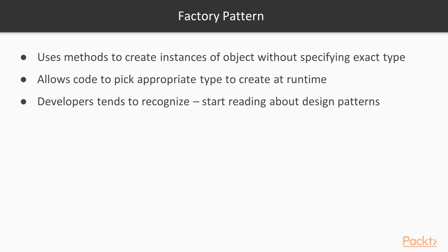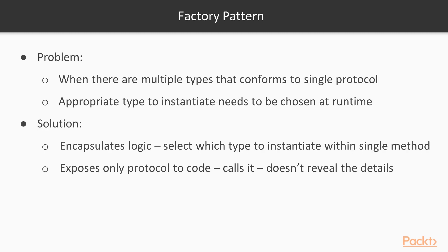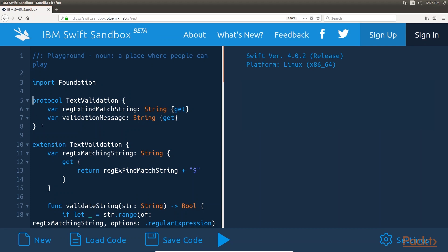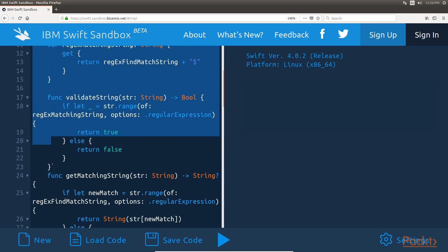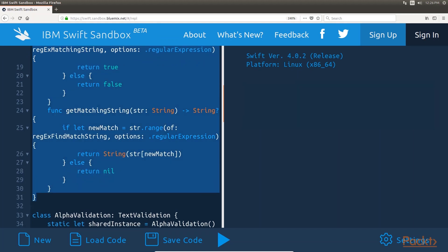For our last example of a creational pattern, we will look at the factory method pattern. The factory method pattern uses methods to create instances of objects without specifying the exact type that will be created, and it allows the code to pick the appropriate type at runtime. It is also one of the patterns that developers tend to recognise when they first start reading about design patterns because they have used it in previous projects. The problem the factory pattern is designed to solve is when there are multiple types that conform to a single protocol and the appropriate type to instantiate needs to be chosen at runtime. The factory method pattern encapsulates the logic used to select which type to instantiate within a single method, exposing only the protocol to the calling code without revealing how a particular type was selected.